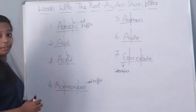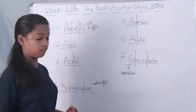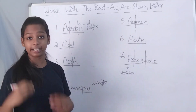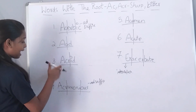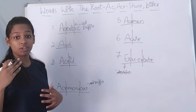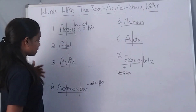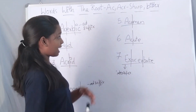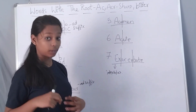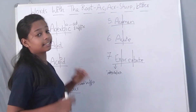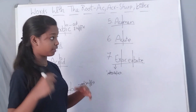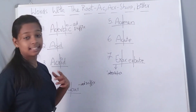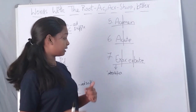Let me summarize this session. Acerbic means critical in a direct rather a crucial way. Acid means a chemical, usually a liquid with a pH less than 7. Acrid means having a strong taste or smell which is unpleasant. Acrimonious means angry and full of strong bitter feelings. Acumen means the ability to understand and decide things quickly and well. Acute means very serious or very severe. Exacerbate means to make things worse, especially a disease or a problem.